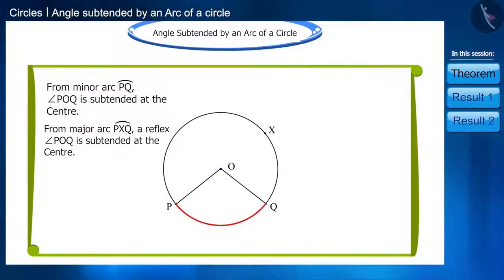from minor arc PQ, angle POQ is subtended at the center. And from major arc PXQ, a reflex angle named POQ is subtended at the center.